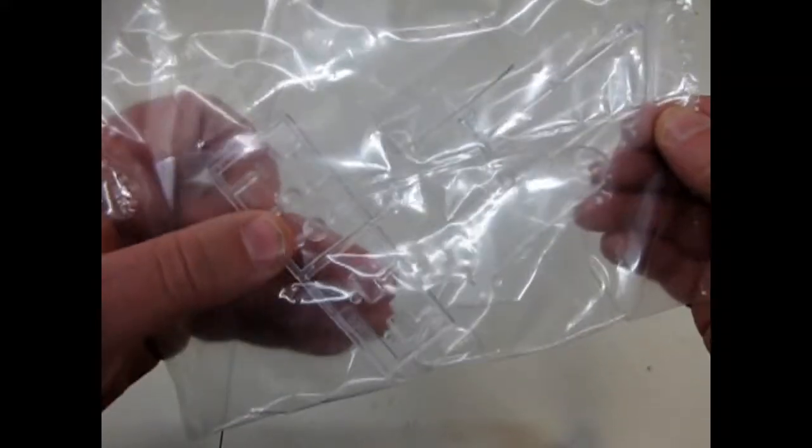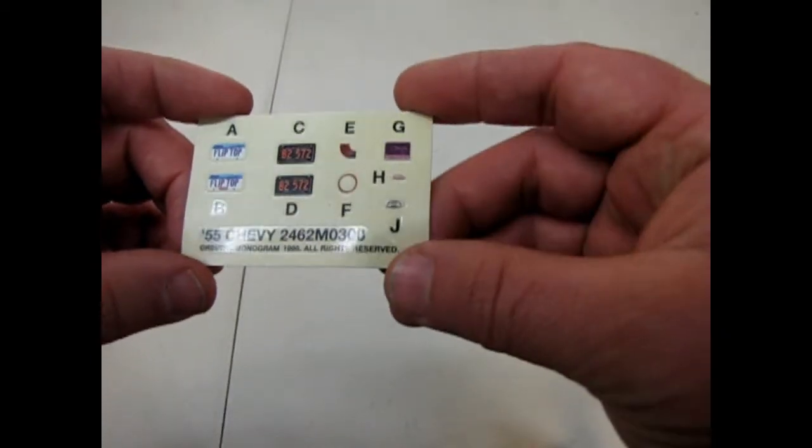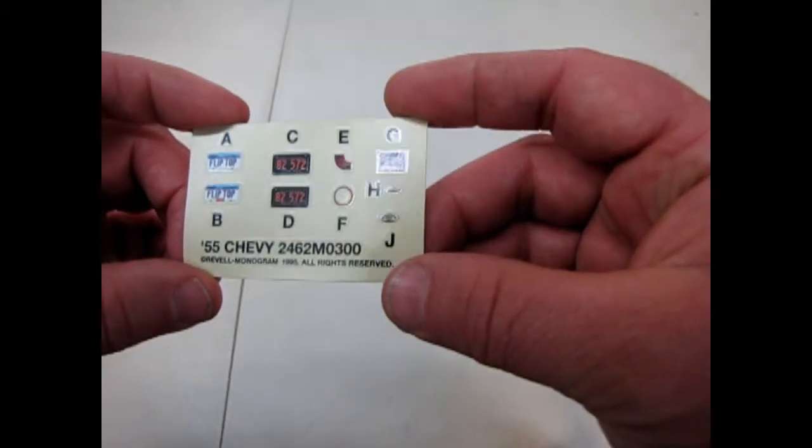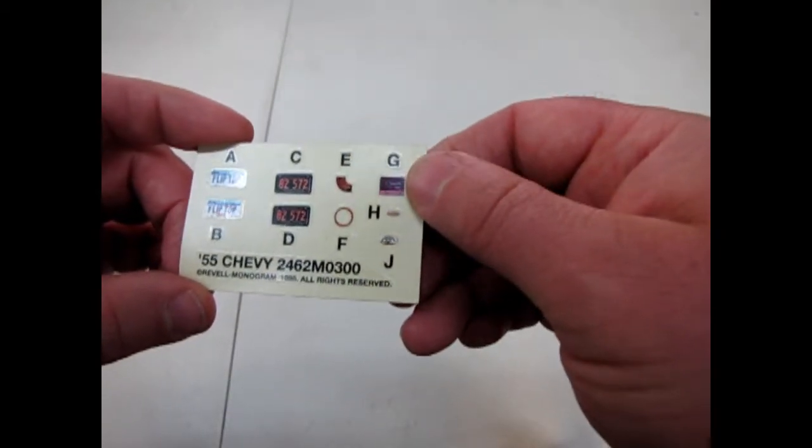There's our clear pieces including the side vent windows. We get a very small decal sheet, some license plates and a couple of the underhood stickers and a little, I guess it's the owner's manual.